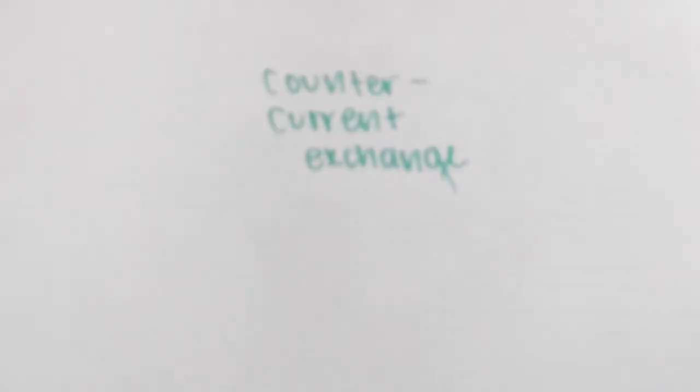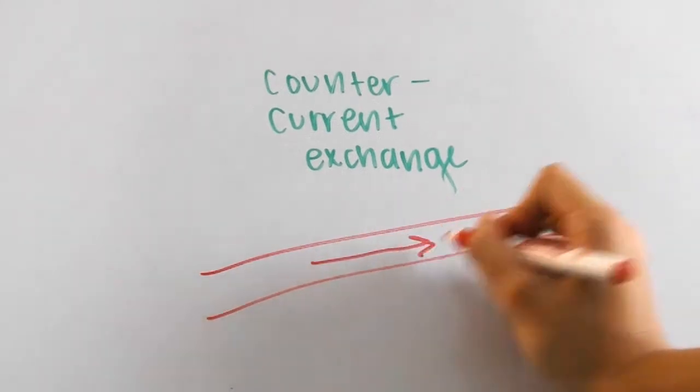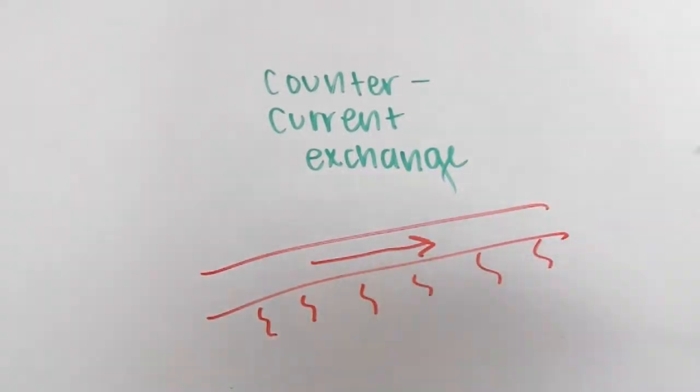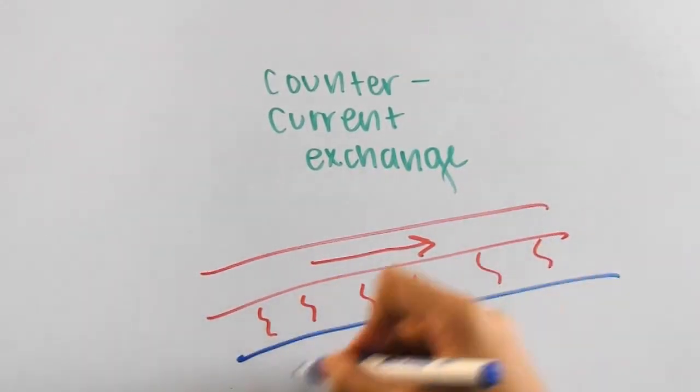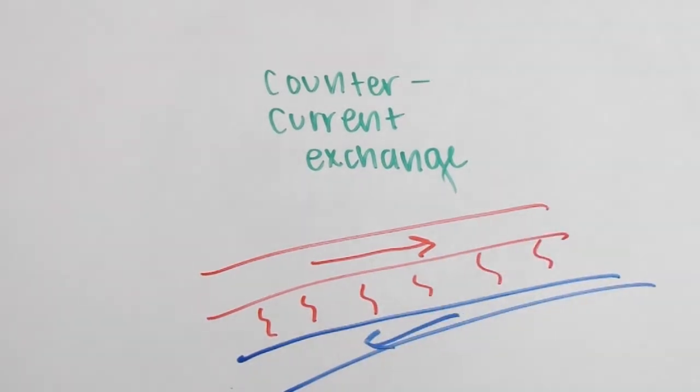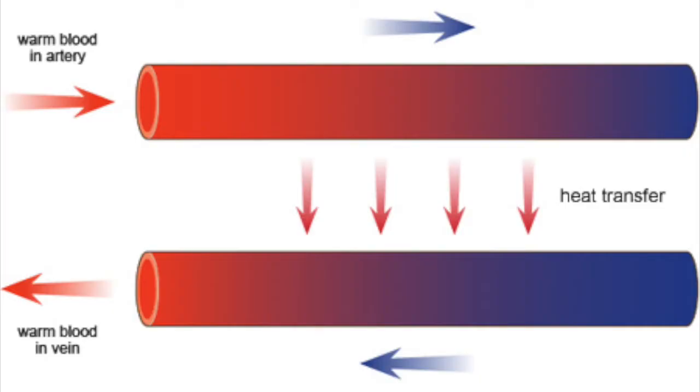There's also this process called counter-current exchange in the circulatory systems of organisms, which is when body fluids flow in opposing directions and heat is transferred through the flow of these fluids. Here's an artery and a vein side by side. The arteries, which carry warm blood, come in close contact with the veins. Heat radiates from the arteries to the veins, raising the temperature of the fluid in the veins.